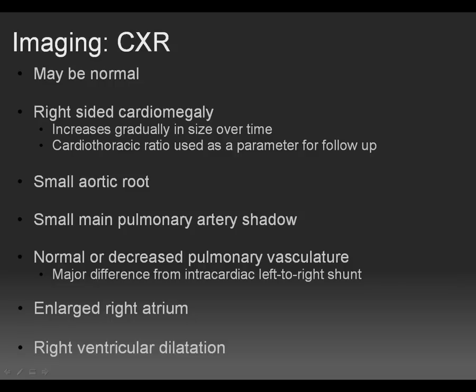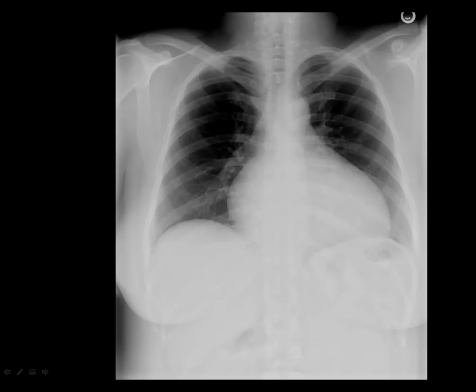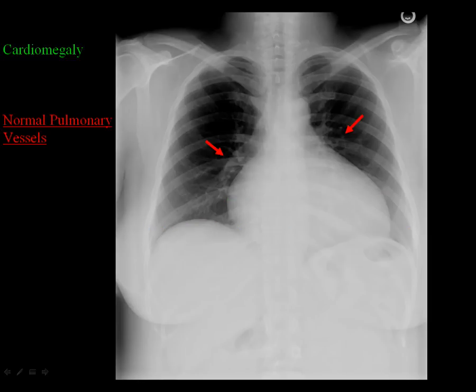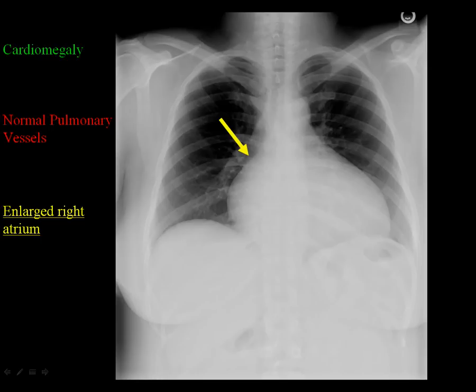The most striking finding is usually right heart enlargement. Over the natural course of untreated disease, the right heart gradually increases in size, reaching massive proportions in adulthood if untreated. Estimation of the cardiothoracic ratio at serial chest radiographs is a simple indicator of cardiomegaly and disease progression. The pulmonary vasculature may be normal or decreased, which is an important feature in distinguishing Epstein's from an intracardiac left-to-right shunt as a cause of cardiomegaly.